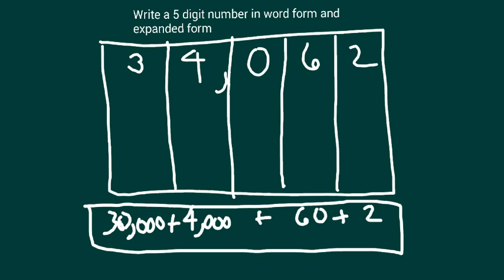This number is equal to thirty four thousand sixty two. That's thirty four thousand sixty two written out in word form.